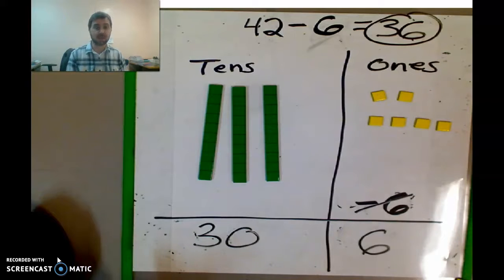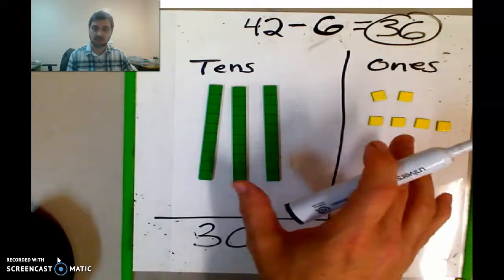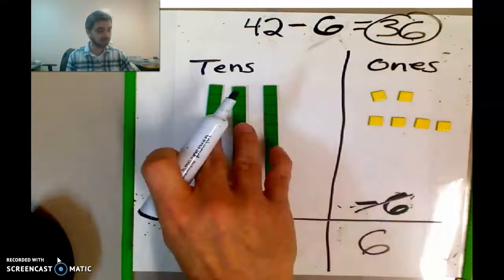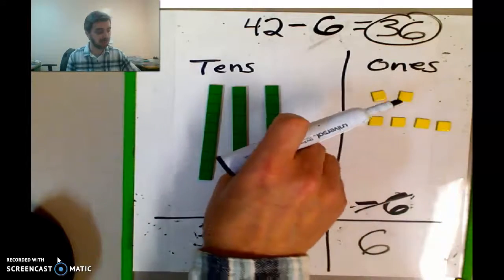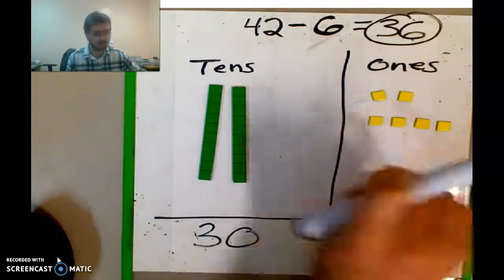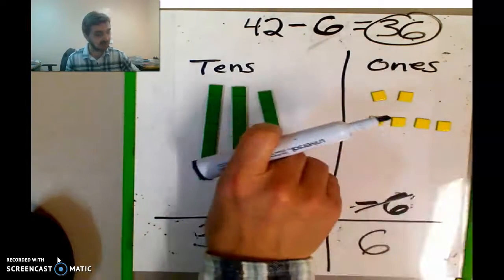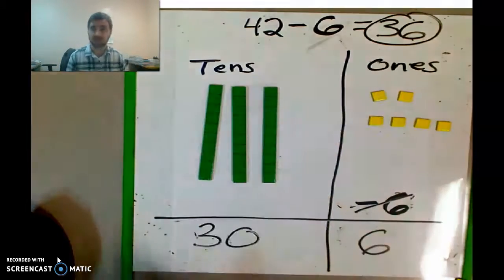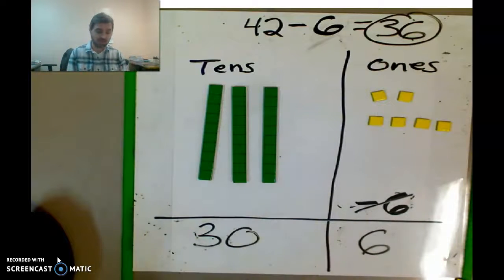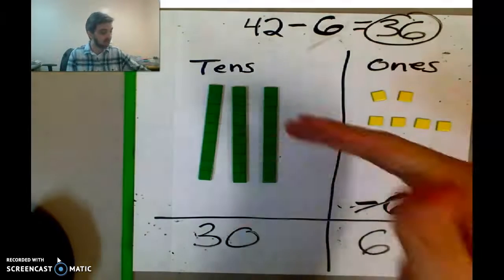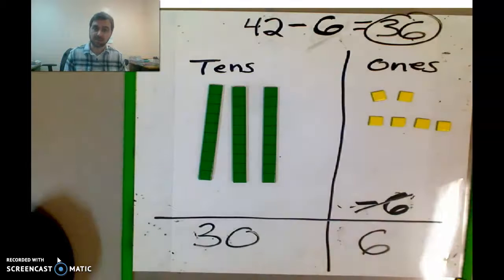Do you see what I did there? I was able to take 42 and turn it into three tens and 12 ones. I just took one of these tens and emptied them out — opened it up to get the Skittles out. And that's fine, you're allowed to do that in order to subtract. And I got my answer.